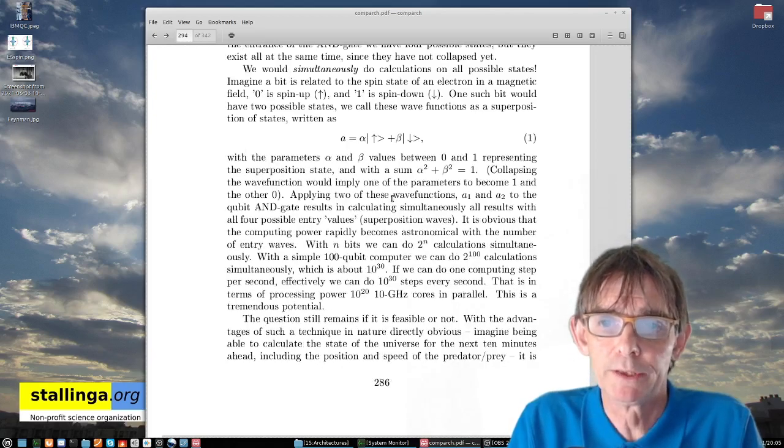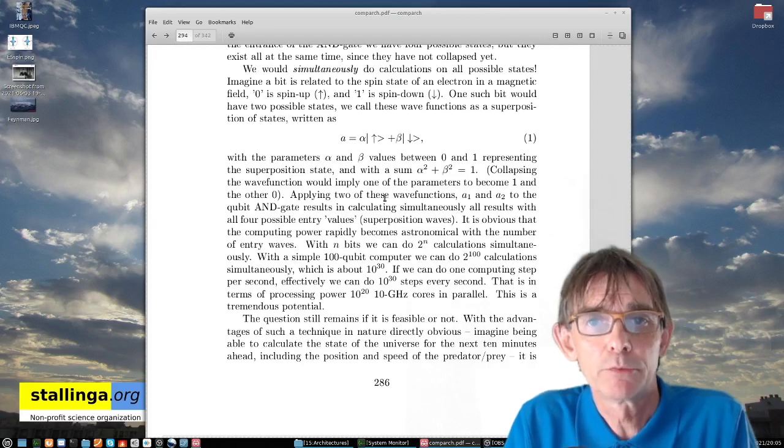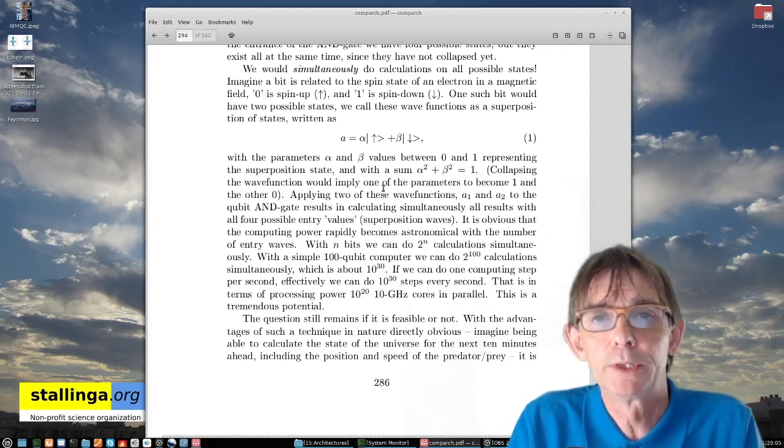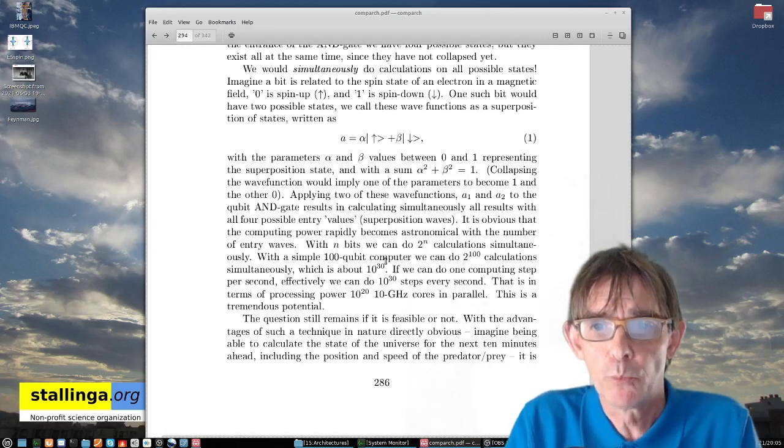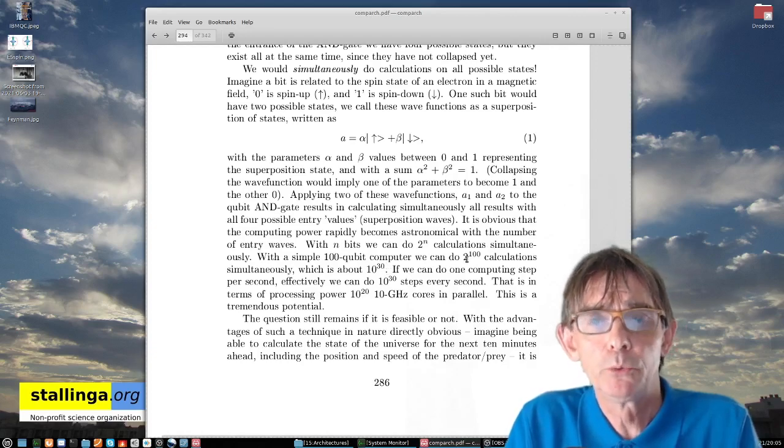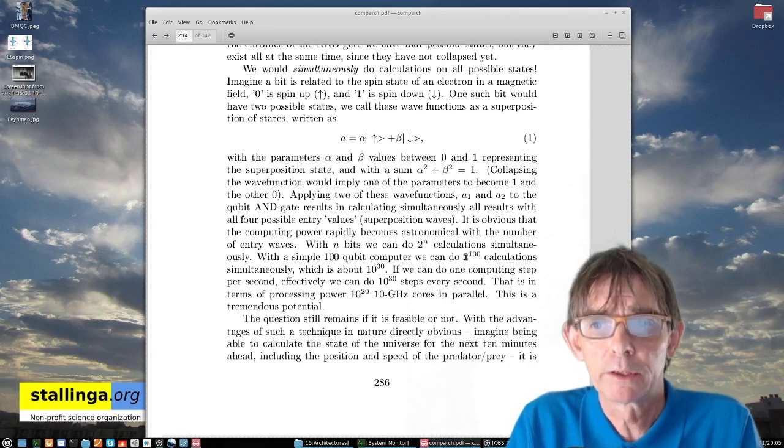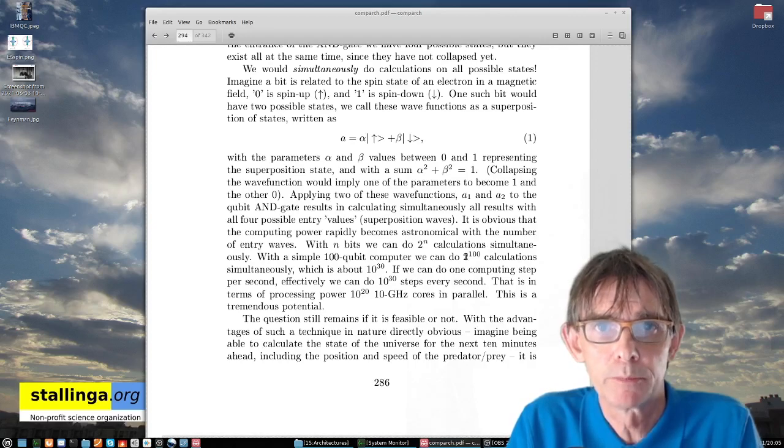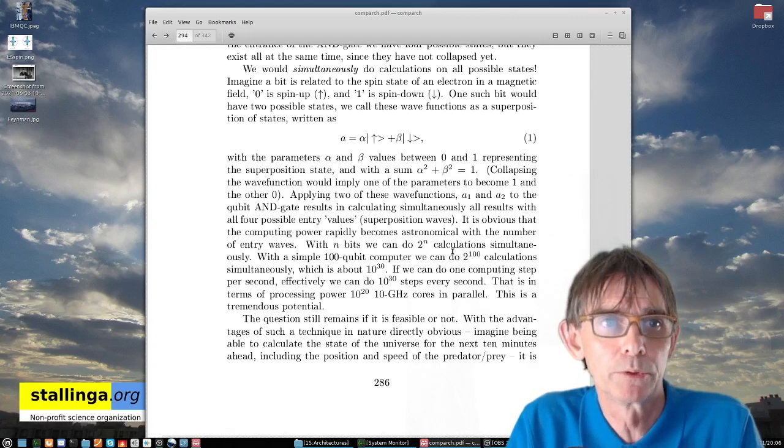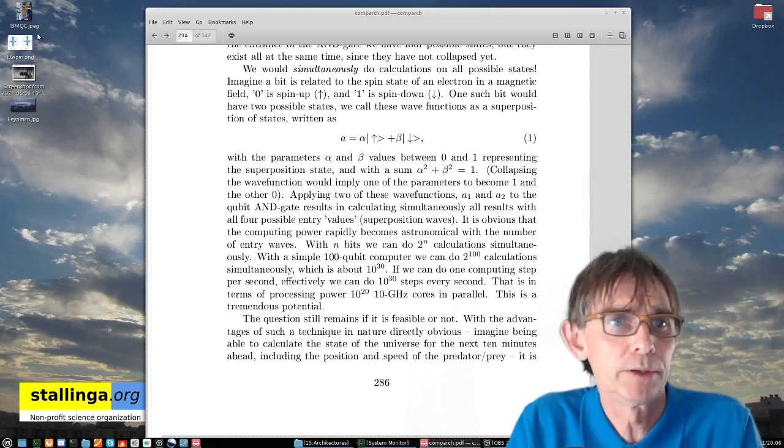Now, how do we then do this? If we take two bits, then we have four calculations doing at the same time. And if we have 100 bits, then we do two to the power 100 calculations at the same time because we didn't collapse the wave function yet. And to give you an idea then, just a simple computer of 100 bits.